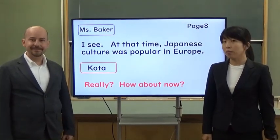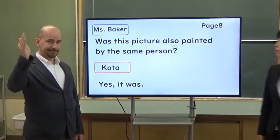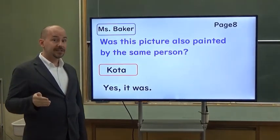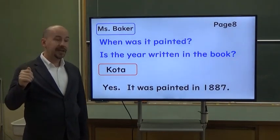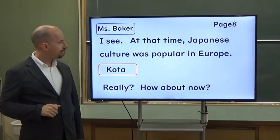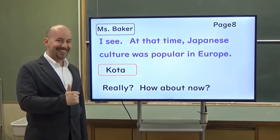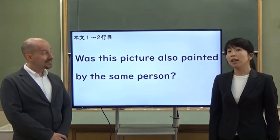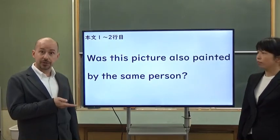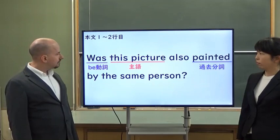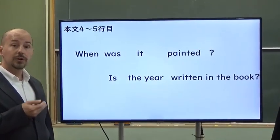Next, let's change parts. You are Ms. Baker, Brian Sensei is Kota. Okay, let's start. Yes, it was. Yes, it was painted in 1887. Really? How about now? Great. So let's check how to make questions. Was this picture also painted by the same person? When was it painted? Is the year written in the book? Do you understand?